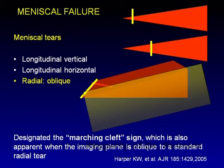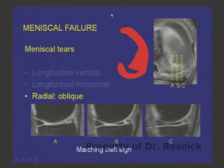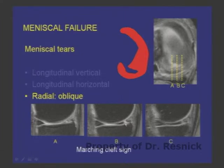Radial tears often become oblique — curving rather than straight — forming a parrot beak tear. A displaced radial tear is a parrot beak tear. On sequential sagittal images, the cleft marches either toward or away from the inner margin — the marching cleft sign. This indicates a radial oblique tear. If you see a vertical-appearing line in the inner half of the meniscus, you are dealing with a radial tear, not a longitudinal vertical tear — and the prognosis is very different.